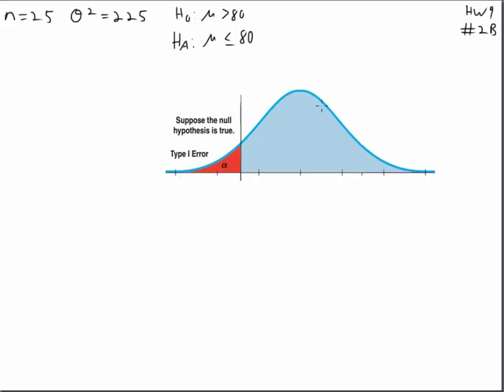So if we're assuming the null hypothesis is true, then the sampling distribution of a mean of 25 people is going to be centered at 80.